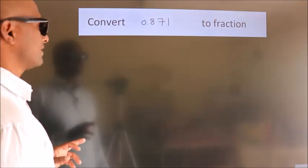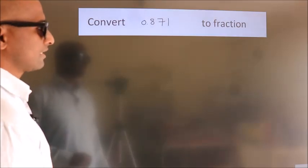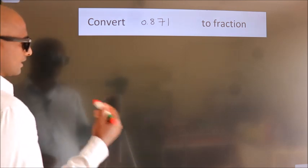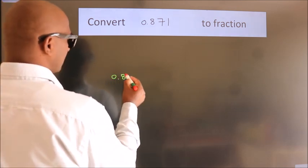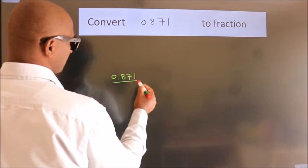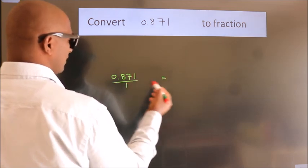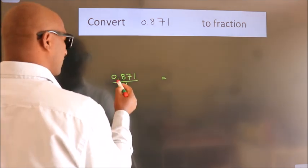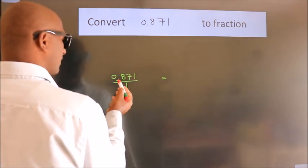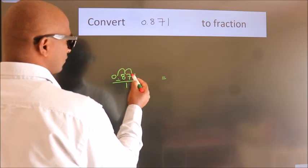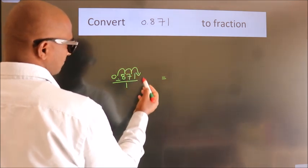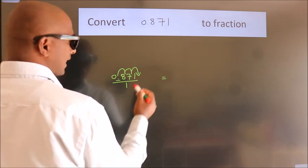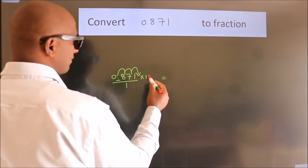Convert 0.871 to a fraction. Given is 0.871. To convert this to a fraction, we have to move the decimal after 1, 2, 3 numbers. To move the decimal after 3 numbers, we have to multiply it with 1000.